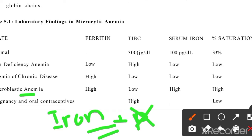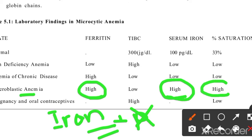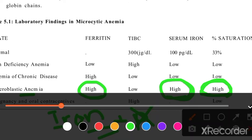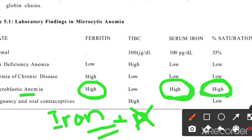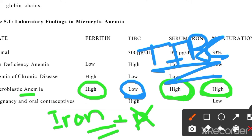When iron is not being used because protoporphyrin is absent, serum iron will be high. When serum iron is high, ferritin — the stored form of iron — will also be high. Serum ferritin will be high, percentage saturation of transferrin will be high. When ferritin is high and iron is high, TIBC will be low because the transferrin is already saturated and does not need to bind more iron.